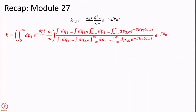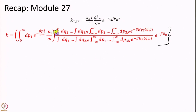We will have to go back to a rather old expression derived almost 6–7 modules ago. We derived Transition State Theory in two ways, and in the second approach we looked at this integral. If you do not remember, you can go back to Module 27. This integral is your forward flux — an integral over the dividing surface of e to the power of minus beta H — and this is your partition function of the reactant.